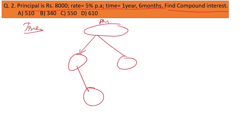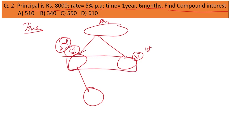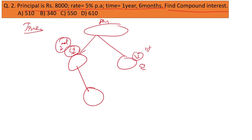In the tree method, we have the principal, and branching from it are the interest values for each period. The first branch is the simple interest for the first year, and the second branch is the simple interest for the second year. For compound interest, the interest from the first year becomes the principal for the second year, generating additional interest.